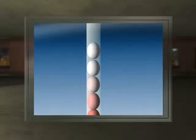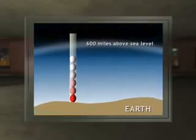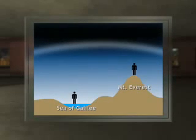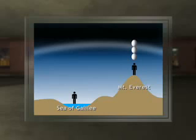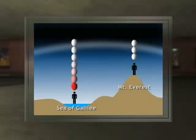The eggs near the top of the tube have less pressure on them because there are fewer eggs above them. With that picture in mind, you should be able to get an idea of air pressure. The farther from earth's center you stand, as on Mount Everest, the fewer eggs above you and the less pressure. The closer to the center of the earth, as in the Sea of Galilee, the more eggs above you and the greater the pressure.